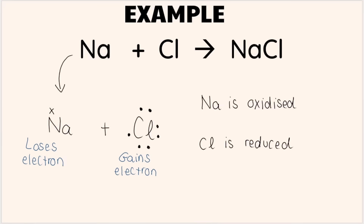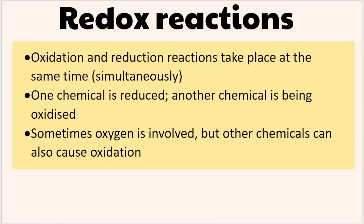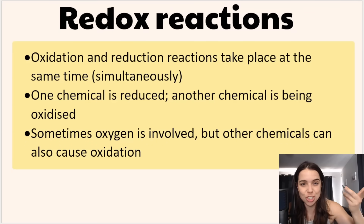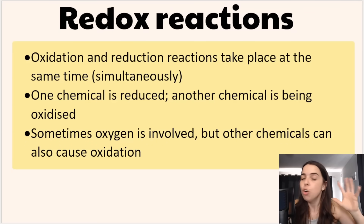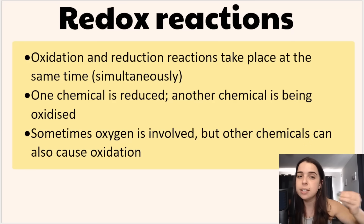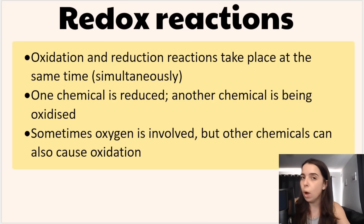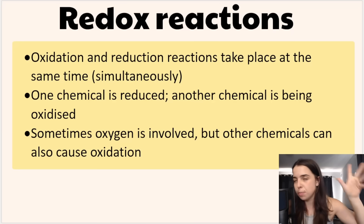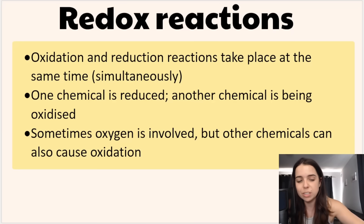This process happens because the two elements want to bond with each other and reach a full outer energy level structure. So in redox reactions, oxidation and reduction take place simultaneously — at the same time. One substance is reduced and another is oxidized, and as I said, sometimes oxygen is involved but not always.